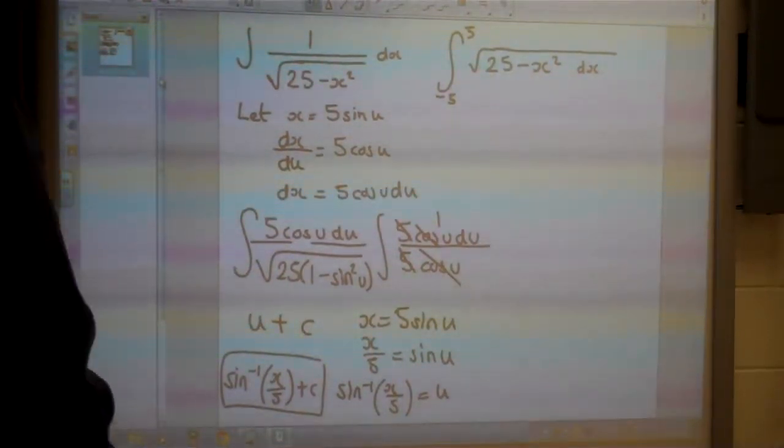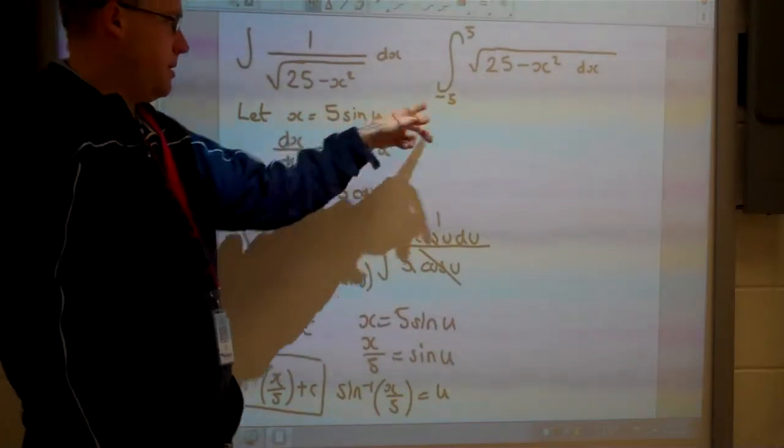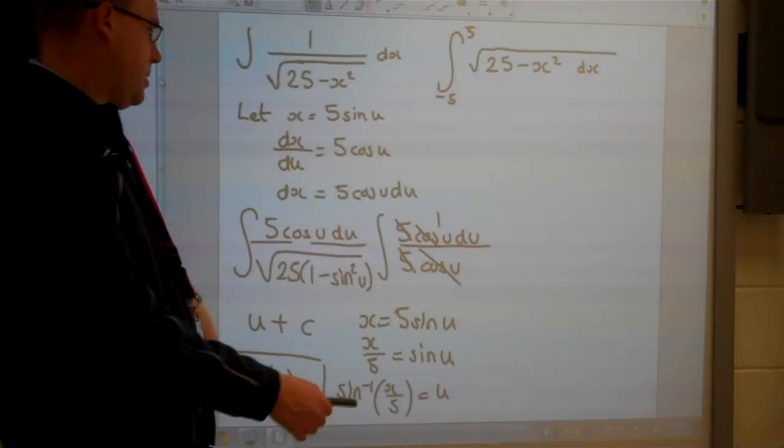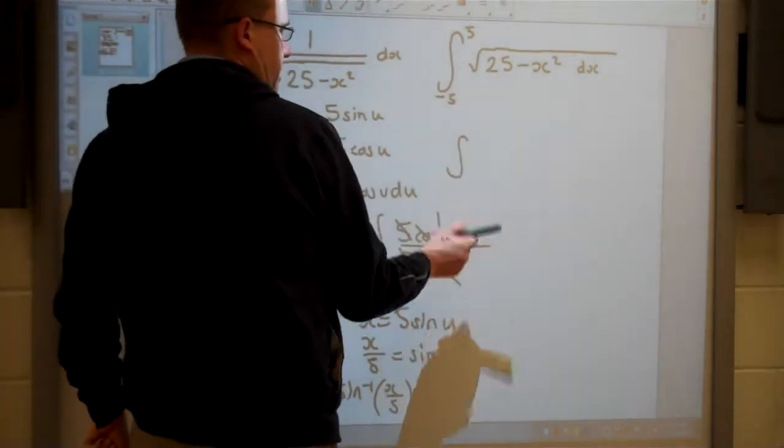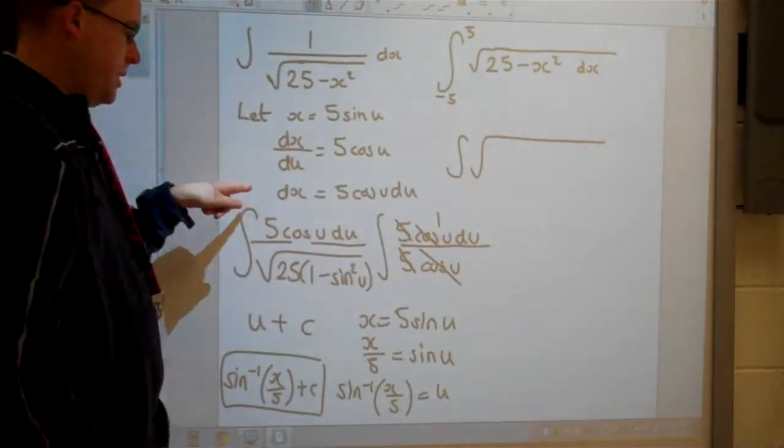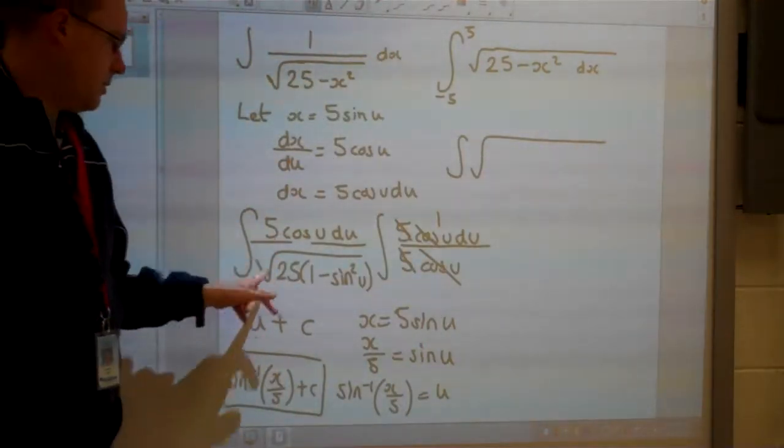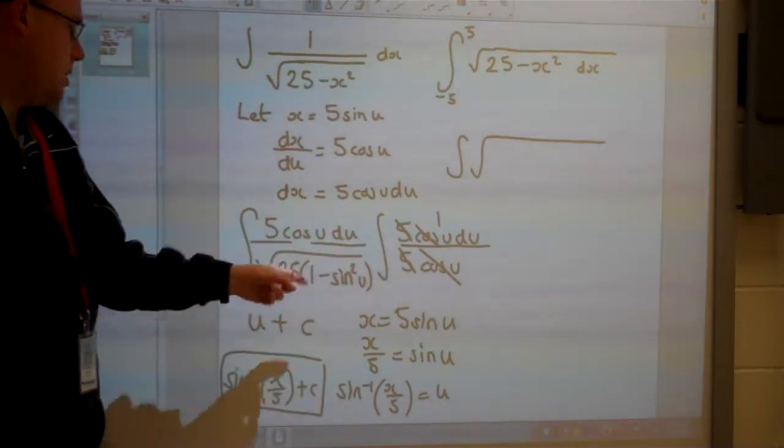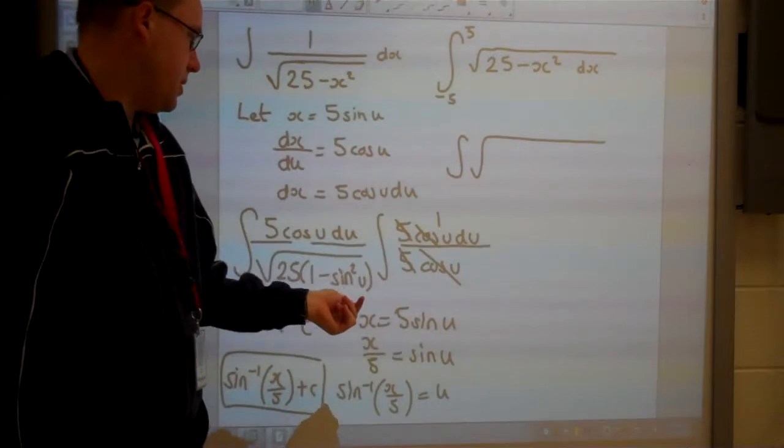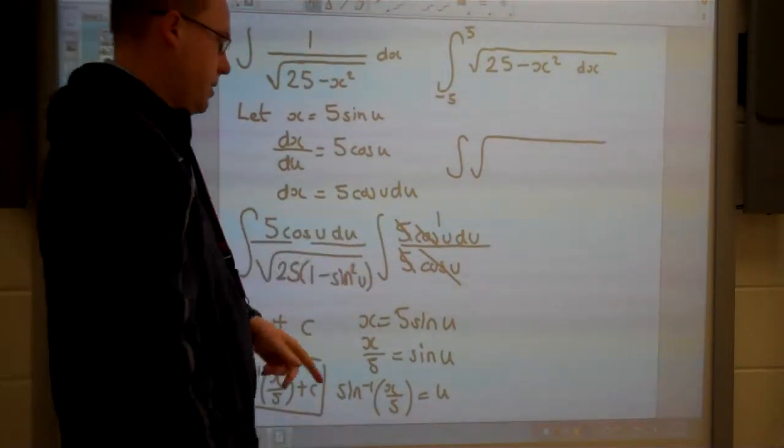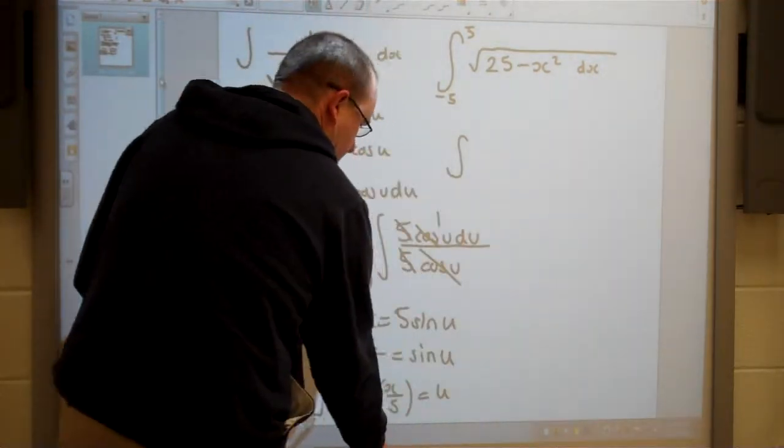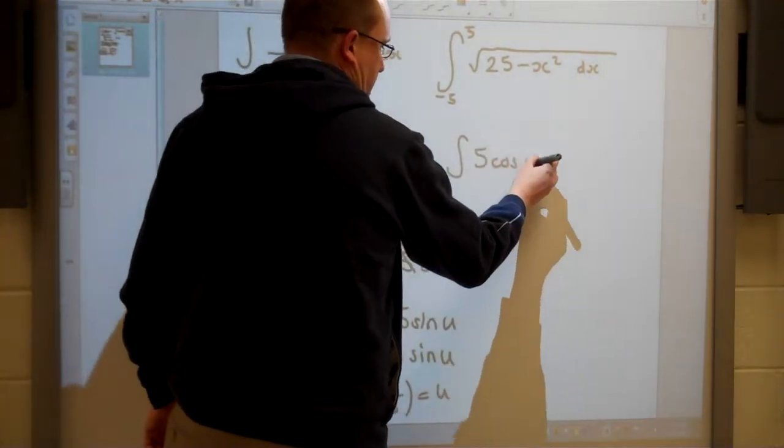So we're now just going to work out this integral. Notice my substitution I'm going to use for this one - I'm going to make it the same substitution. So all these steps are actually already done for me. All I have to do is say it's the integral of, and actually all these steps are going to be the same as well. So square root of 25 times 1 minus sine squared u. When you do the square root of 25 you get 5. This is cosine squared so we get cosine u. So actually what I can say then is this equals 5 cosine u.